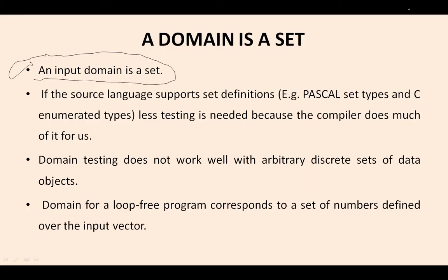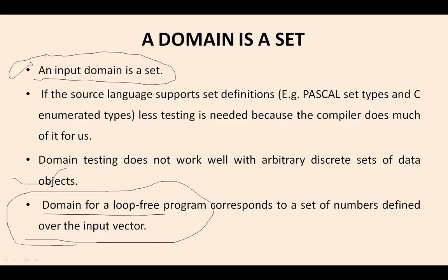For instance, integer inputs taking only integer values, float taking float values — the compiler itself checks whether the value is correct or not at compile time. We need not test again for data types and variables. Domain testing does not work well with arbitrary discrete sets of data objects. Domain testing is loop-free — it corresponds to a set of numbers defined over the input vector. There are no loops in domain testing; it works only on a set of possible numbers defined over the input vector.